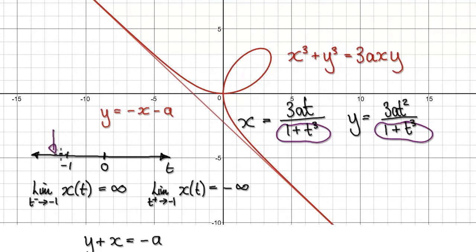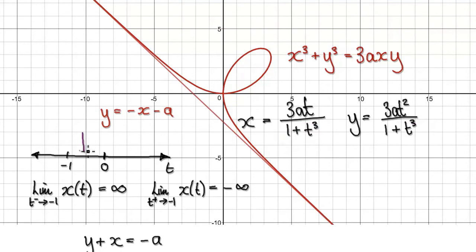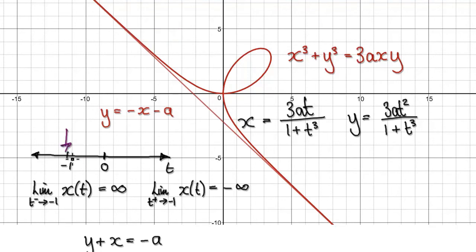So as you start here and move towards t = -1, the particle will move along here. And if you start here and t heads towards -1 from the other side, the particle will move along here. On t = -1, it breaks down.